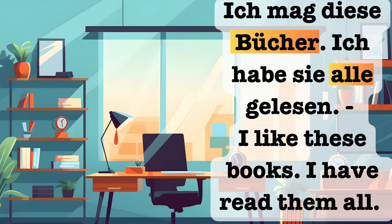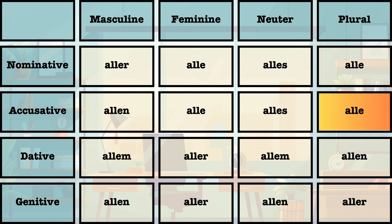In that sentence, alle is referring back to the books in the previous sentence. Since they are plural, I use the plural ending at the end of all — i.e., alle.